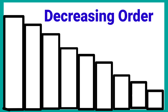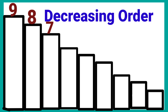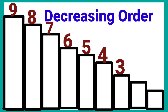Decreasing order: 9, 8, 7, 6, 5, 4, 3, 2, 1. In decreasing order, numbers came from big to small. So it is decreasing order.